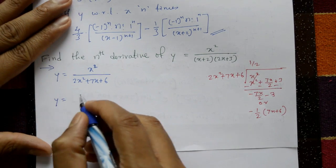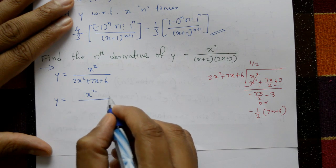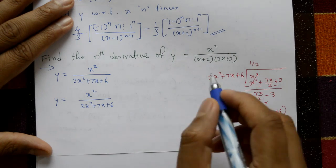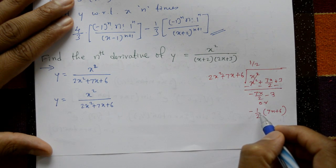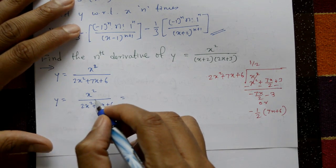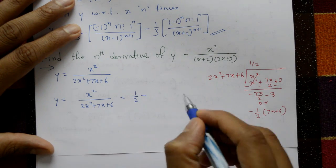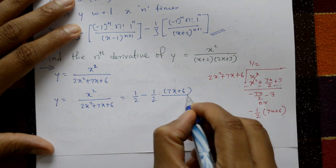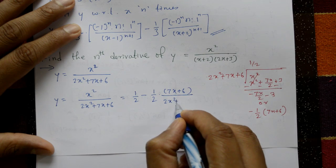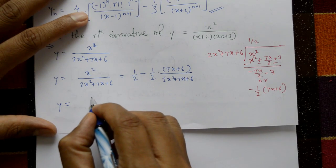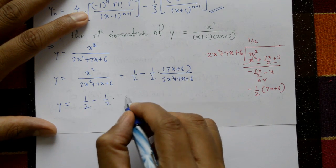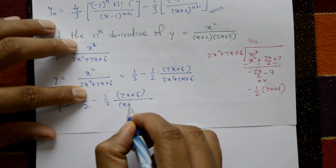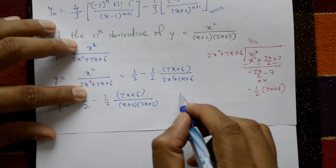So y = x²/(2x²+7x+6) = (quotient) + (remainder/divisor) = 1/2 minus (1/2) · (7x+6) / (2x²+7x+6), or y = 1/2 minus (1/2) · (7x+6) / [(x+2)(2x+3)]. Call this equation number 1.